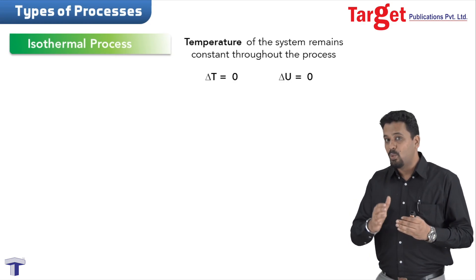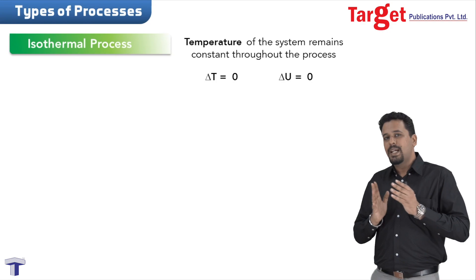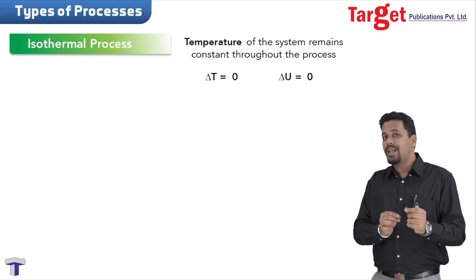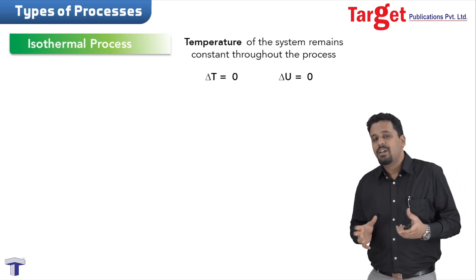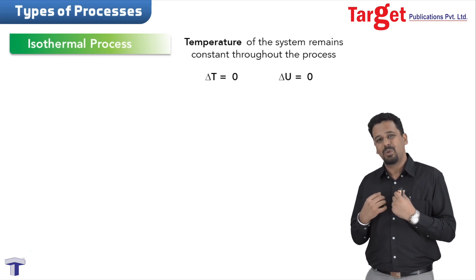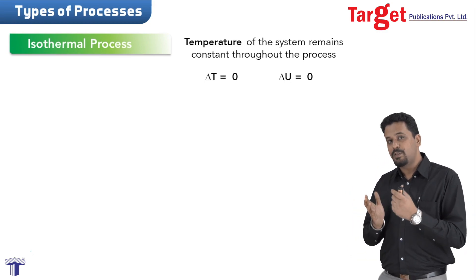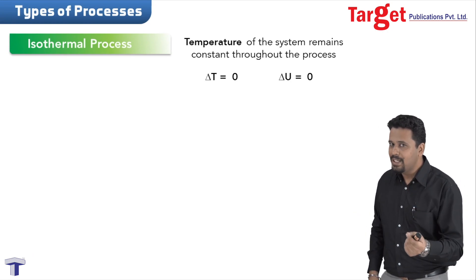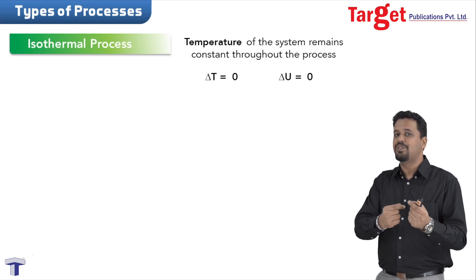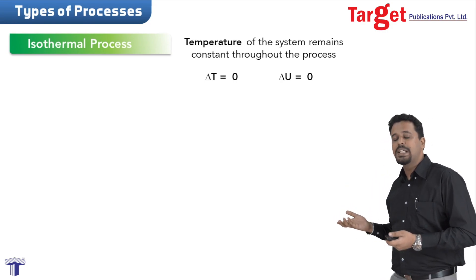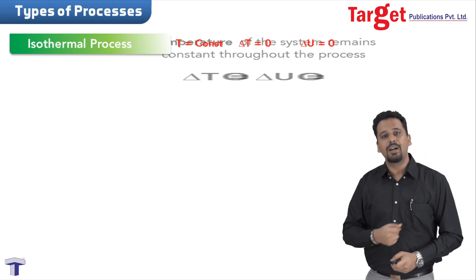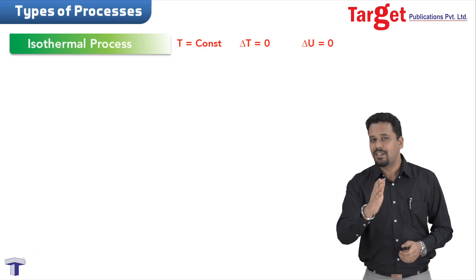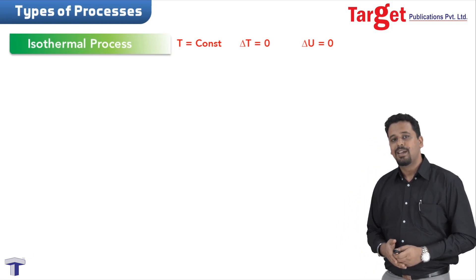Some of you may be wondering what internal energy is. Internal energy is the energy present in the system by default — kinetic energy and potential energy, all these energies put together. Internal energy depends on temperature: if you increase the temperature, you increase the kinetic energy of the molecules. So if temperature does not change, internal energy will also not change. Therefore, in isothermal process, delta T is zero and delta U is also zero.